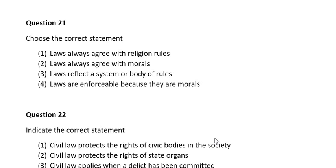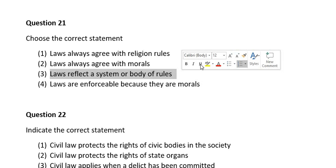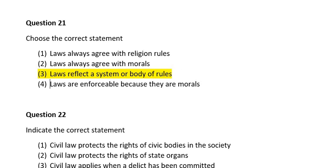Question twenty-one. Choose the correct statement. Number one, laws always agree with religious rules; number two, laws always agree with morals; number three, laws reflect a system or body of rules; number four, laws are impossible because they are morals. The correct answer is number three: laws reflect a system or body of rules.